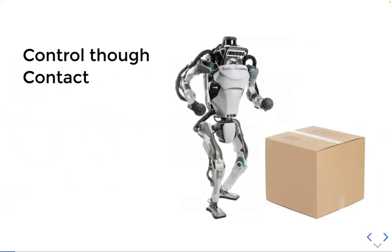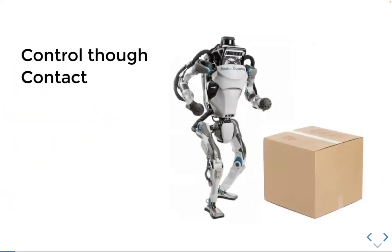First, some motivation. Let's say we have a robot and we want to do things in the world, like put this box somewhere. It's going to have to do it by making contact with the box. In general, anything that we want to do is going to involve planning and control through contact. So it's very important.